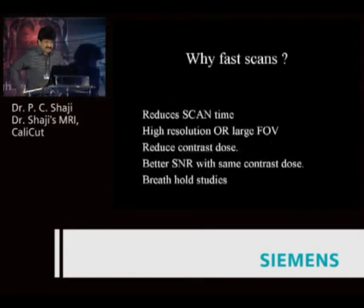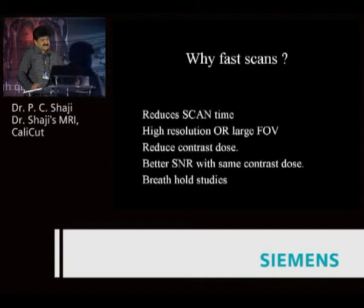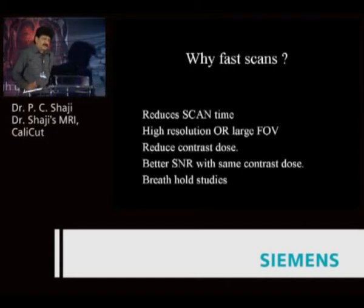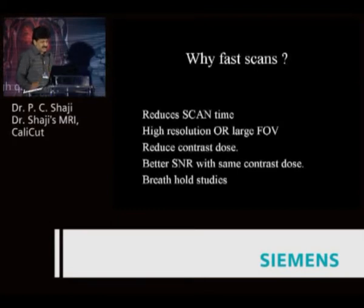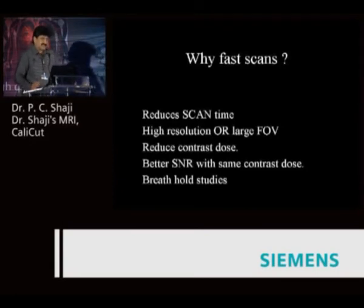The most important point is the short acquisition time, and for this you need fast scans. Fast scans reduce the scan time, and when you have a reduced scan time you can do high resolution imaging, a large FOV, or multi-phasic threshold studies. All of these are possible if you have a faster system. When you reduce the scan time, you can also reduce the dose of contrast and get better SNR with the same contrast, enabling threshold studies in a short time.